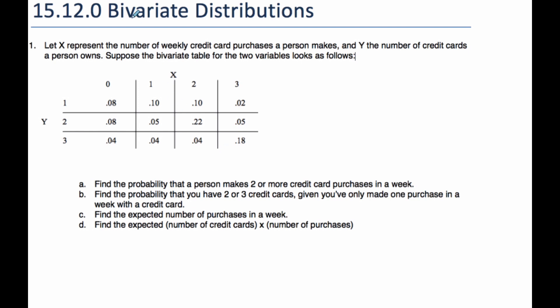Now we're moving on to bivariate distributions. That means we're talking about two variables, as opposed to the past where we've only had one to deal with. Here's an example where X represents the number of weekly credit card purchases a person makes, and Y is the number of credit cards the person owns.